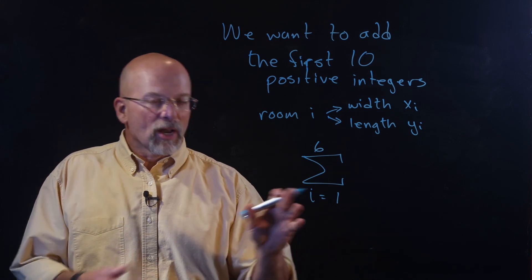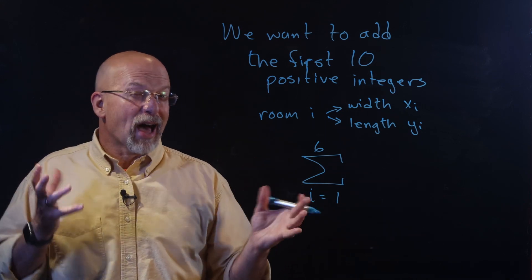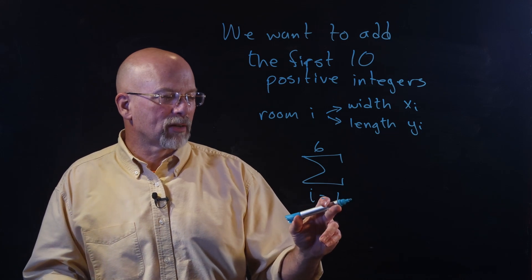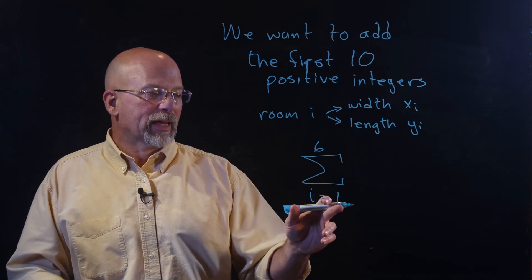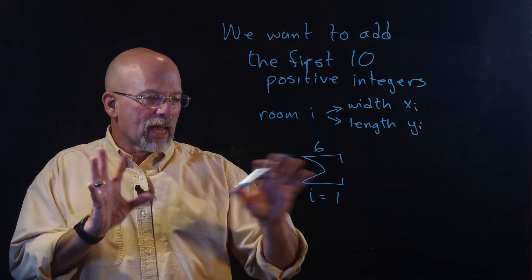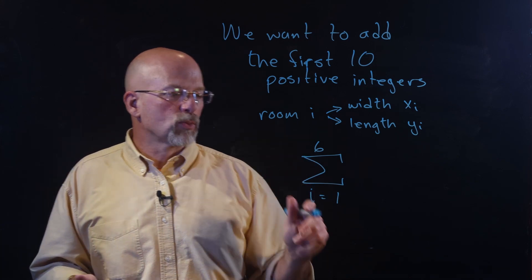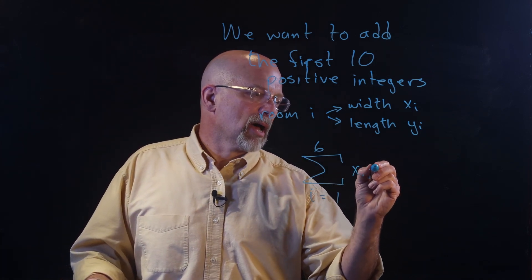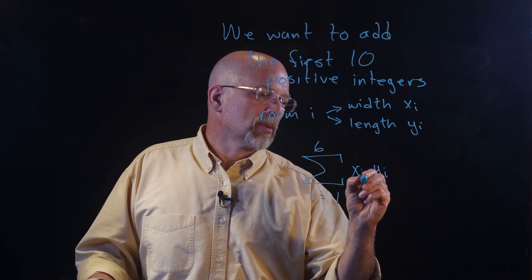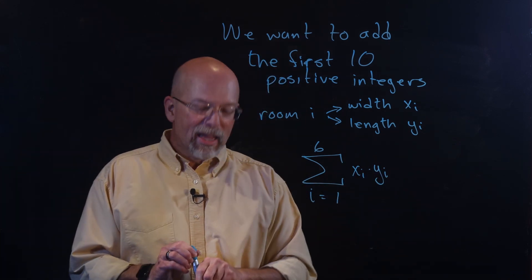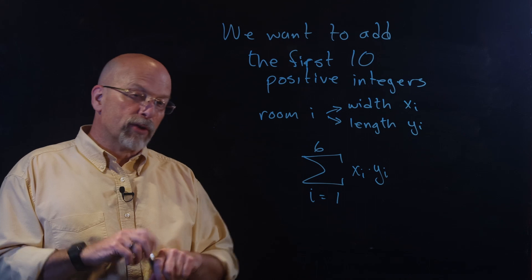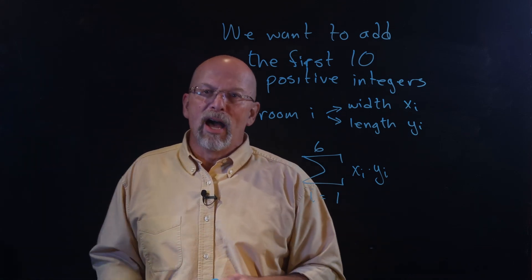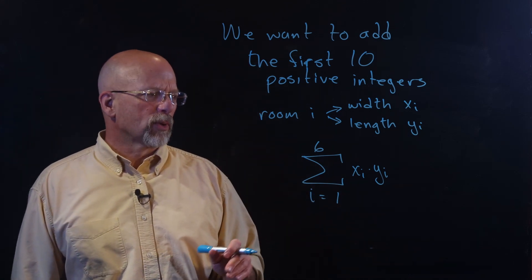Remember, depending on what we're working with, a lot of computer applications start counting from zero, so you may see that starting like zero to five. But in this case, we're going to say i equals one up to six. We're going to add x sub i times y sub i, and that will give us the total square footage or the overall floor area of this six-room house.